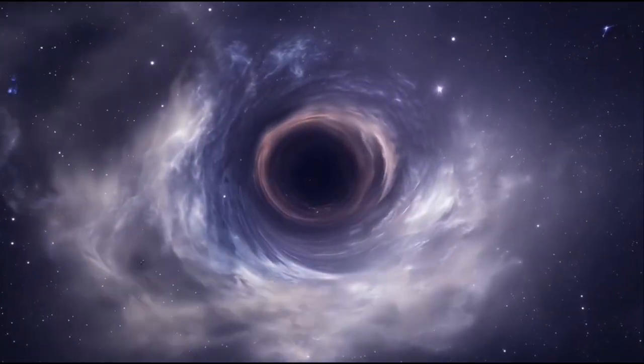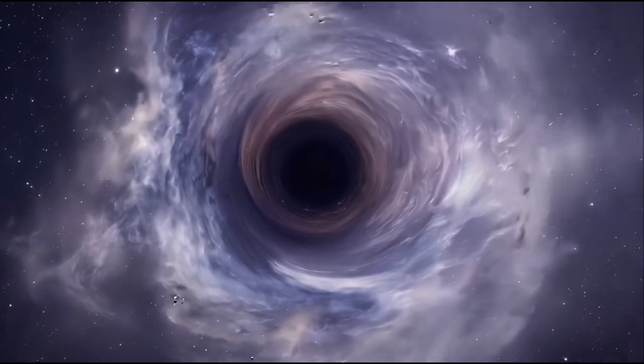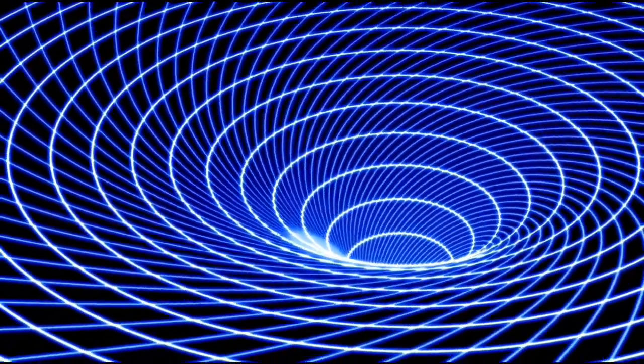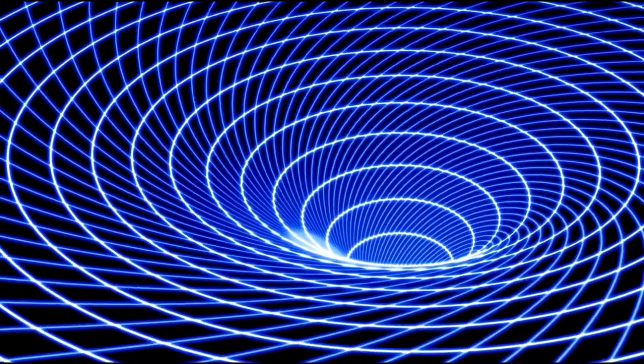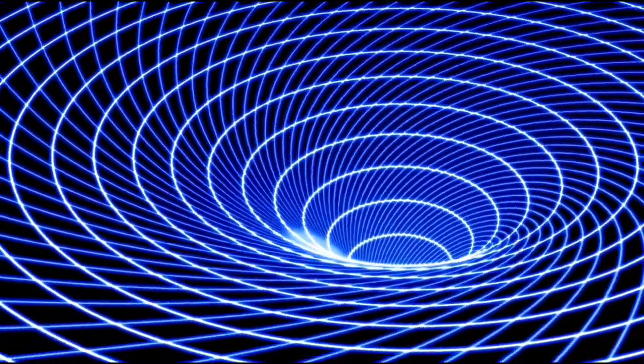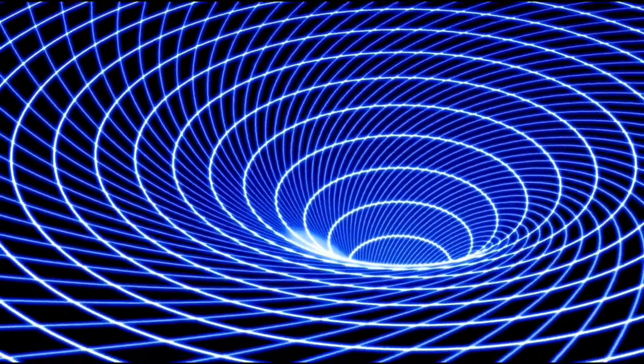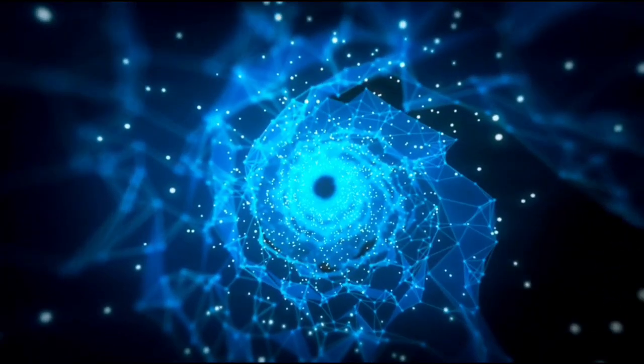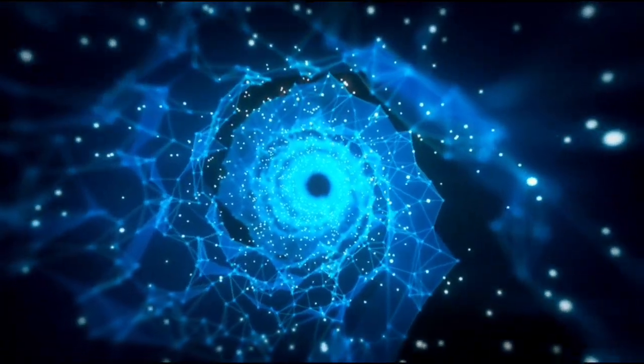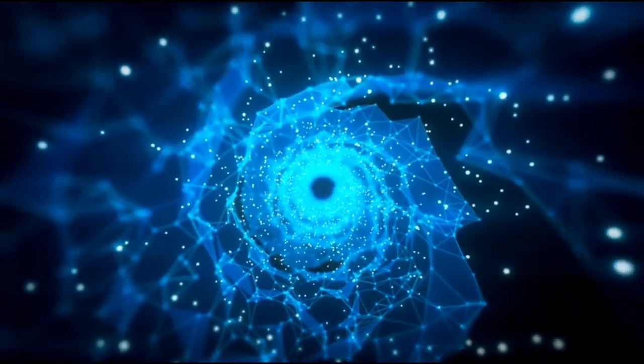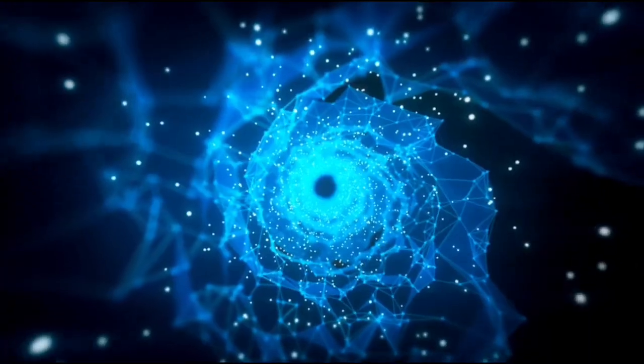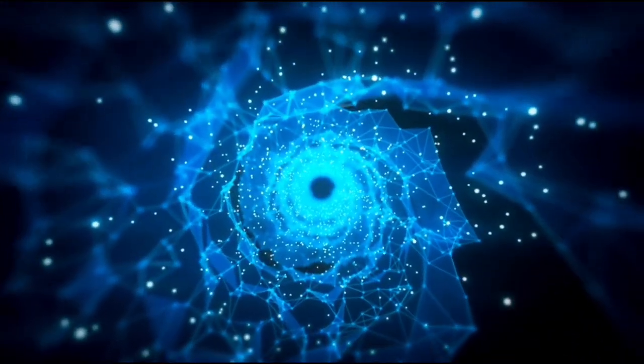Despite this, the idea of a wormhole as a potential gateway to different parts of the universe, or even different points in time, has captured the imagination of physicists for years. One specific type of wormhole, known as the Kerr wormhole, has been a subject of fascination. Named after Kerr, this hypothetical wormhole could theoretically connect two distant points in space-time, possibly even linking different universes or timelines. While the idea of using wormholes for interstellar or time travel is exciting, there are significant challenges to overcome. For one, wormholes are predicted to be unstable, and the extreme radiation and forces surrounding them would make it nearly impossible to traverse them safely.